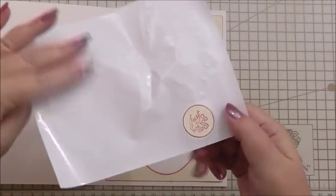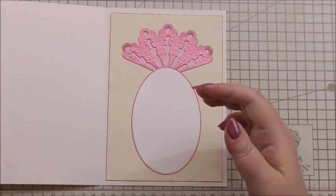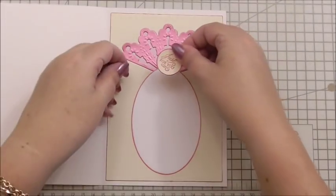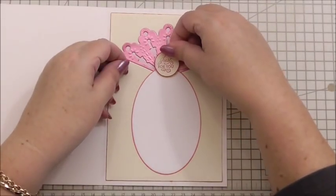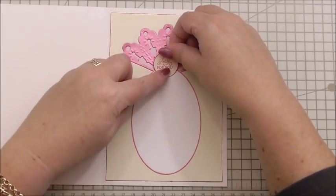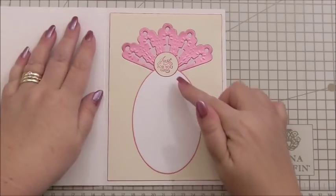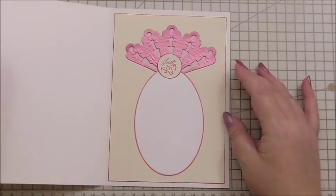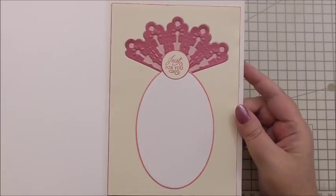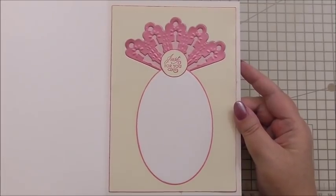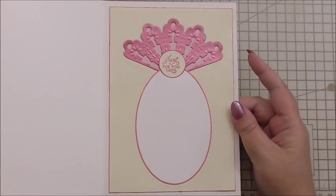And then the little stamp circle, I'm just going to add just at the base of the fan, on the tip of the oval. So now we've got a complete section to write our to and from and our message, and it's going to match perfectly to the front. What a pretty idea.